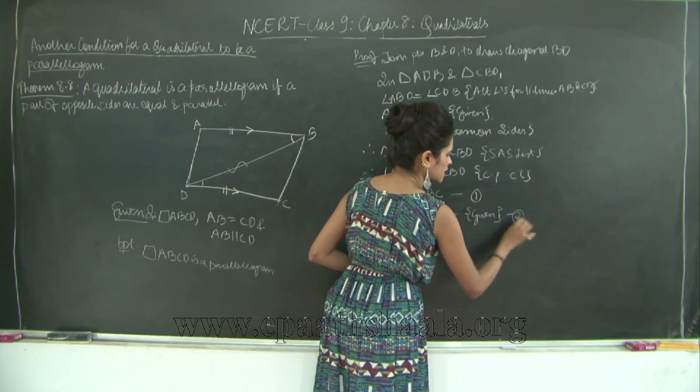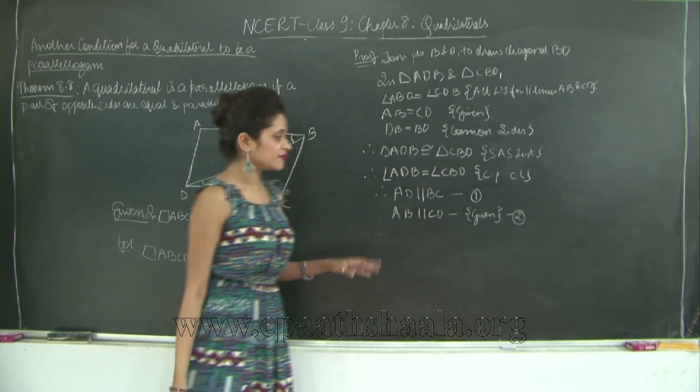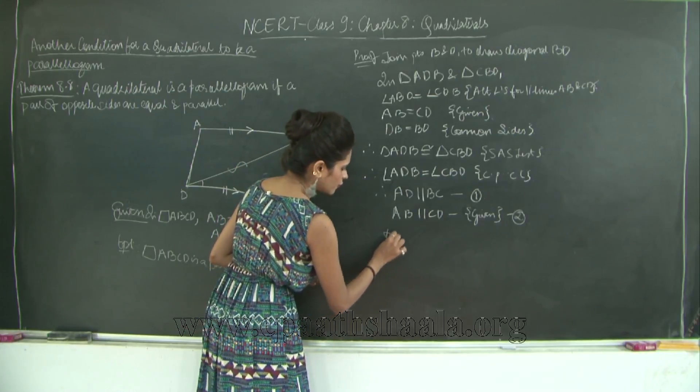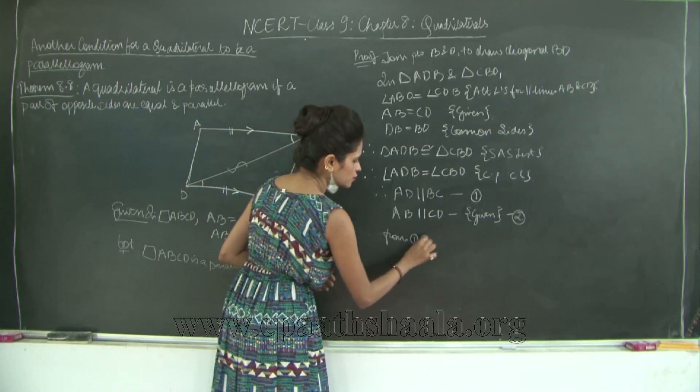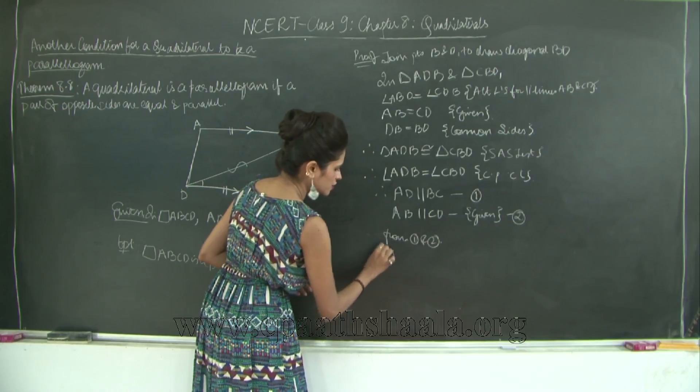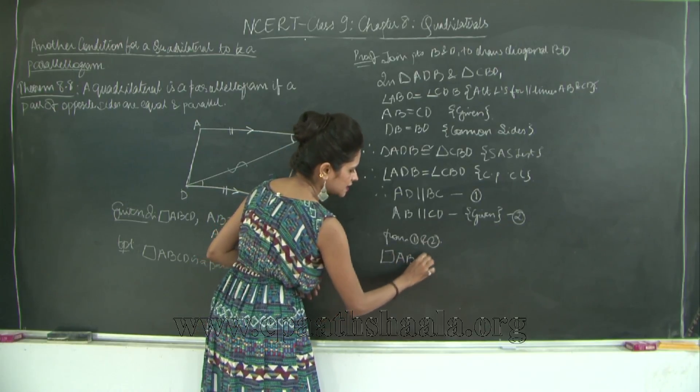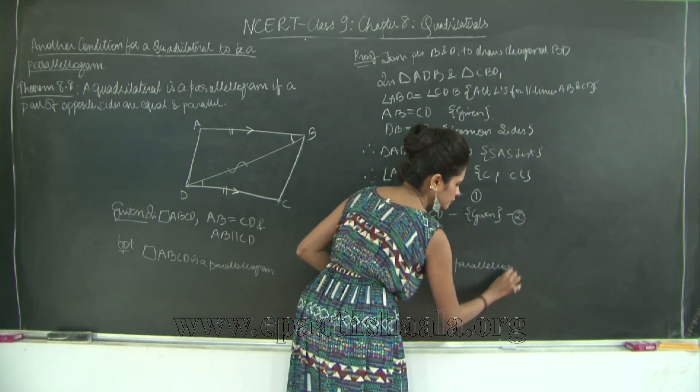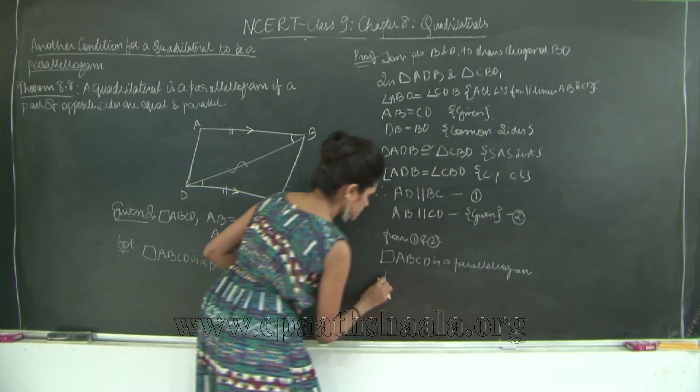I will mark this as 2. Therefore what can I say from 1 and 2, that quadrilateral ABCD is a parallelogram. So from 1 and 2, quadrilateral ABCD is a parallelogram. And I will say hence proved.